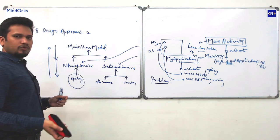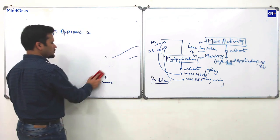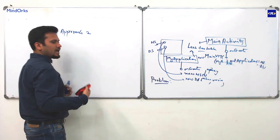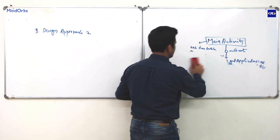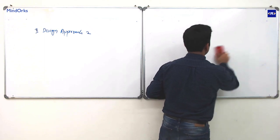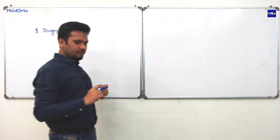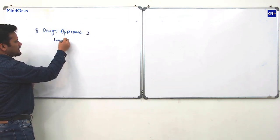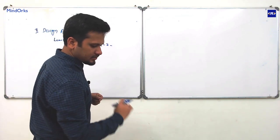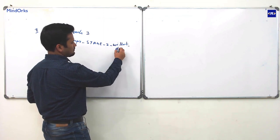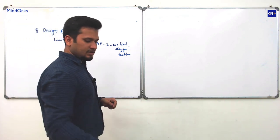Now we will see Design Approach 3. These concepts will help you understand what Dagger is actually doing for you, so you know why it's needed. You can find this solution in the project 'Learn Dagger, Stage 2 — without Dagger better.'